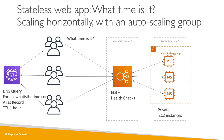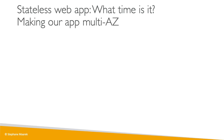Now we have an application with no downtime, autoscaling, and load balancing — a really stable architecture. But what if there's an earthquake and availability zone one goes down? Our application is entirely down and our users are not happy. Amazon tells us: you haven't implemented a multi-AZ application. We recommend multi-AZ to be highly available.